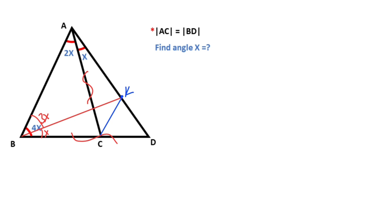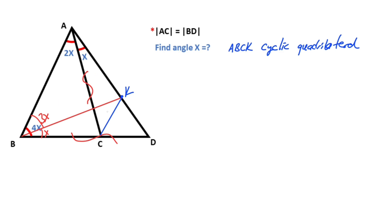Notice that there's the same length opposite of the angle x. That means A, B, C, K is a cyclic quadrilateral. And then if there's a 3x opposite of the length, angle A, C, K must be equal 3x, because of the cyclic quadrilateral.